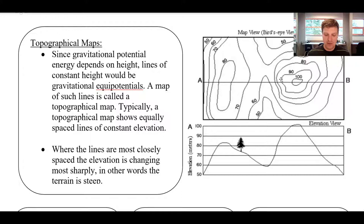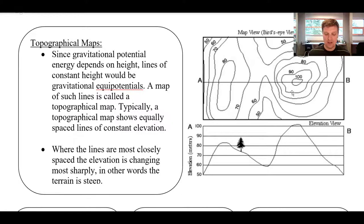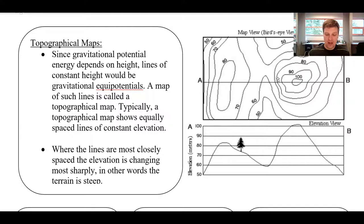You can imagine if I walked all the way around that line, it'd be like walking around a mountain while staying at an elevation of 90 meters — staying the same height above zero, staying at the same potential. If I was to walk around in a circle, I wouldn't be doing work because I'm not changing my energy. If I climb up to 100, I have done work. Or if I roll down the hill to 50, I've done work as well.